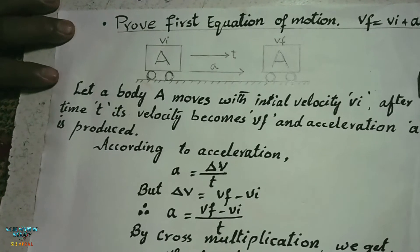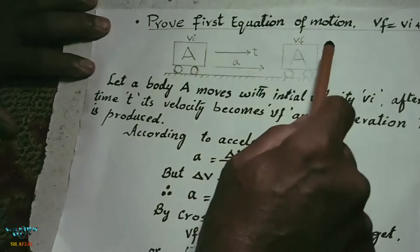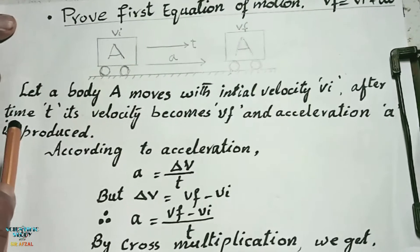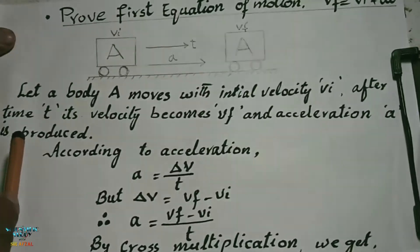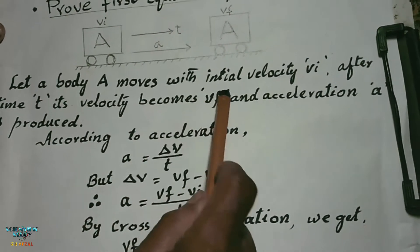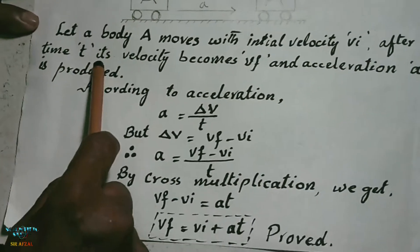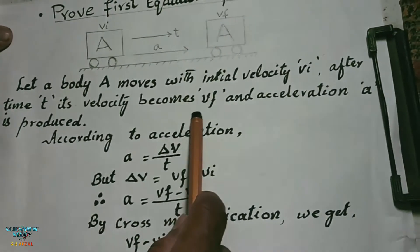First of all you have to draw the diagram, then description of the diagram is necessary. You will start the description of diagram with one of the three words: let, suppose, or considered. For example, let a body A moves with initial velocity vi, after time t its velocity becomes vf and acceleration a is produced.